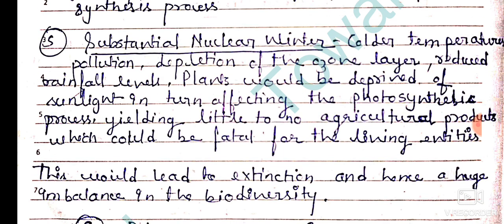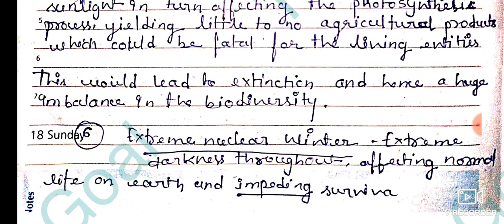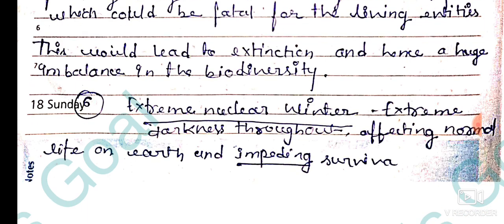Next is substantial nuclear winter. This involves colder temperatures, pollution, depletion of the ozone layer, and reduced rainfall levels. Plants would be deprived of sunlight, in turn affecting the process of photosynthesis and adding little to no agricultural products, which could be fatal for living beings. This would lead to extinction and hence a huge imbalance in biodiversity.